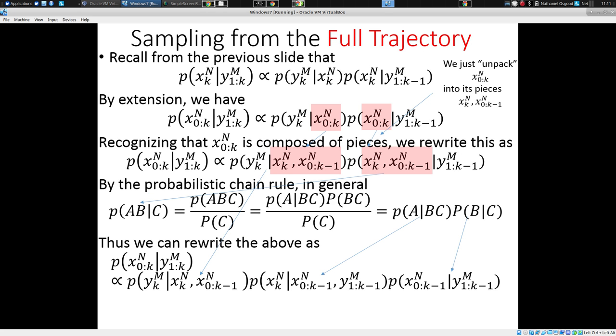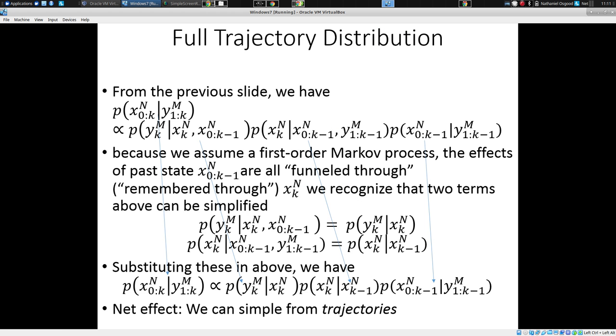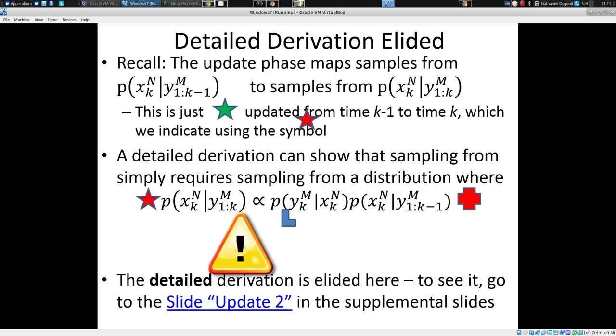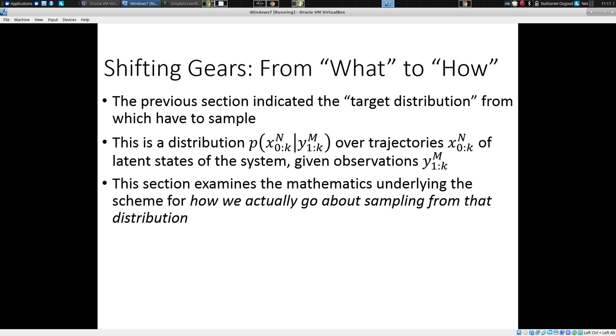And that allows these two to have a net effect of mapping our understanding of the system at time K minus one, taking into account all the data up to and including that time, map from that to the current situation, taking into account our understanding of the dynamics of the system as generated by the model, and our understanding of the implications of the latest data point Y sub K. It updates from this to this. And this is our recursive update. We're going from this one to this one. It's kind of from prior to posterior. We're updating our understanding, take into account model dynamics and this observation. That's what we talked about last time. But all of this was couched in terms of distributions. It was couched in terms of probability distributions. And I'd like now to shift to an understanding of how we sample from those distributions.